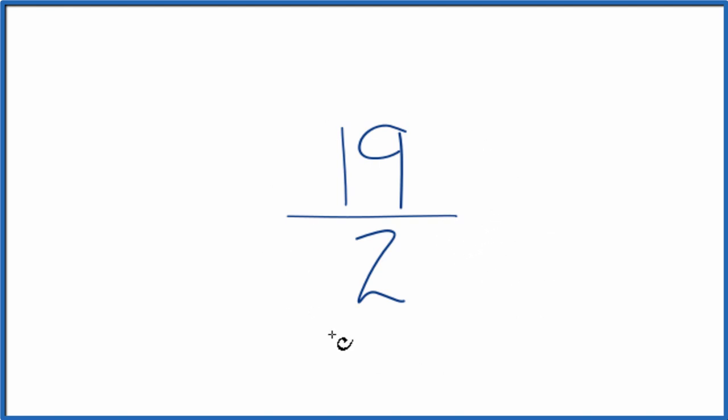So 19 over 2, the fraction, is already simplified. It's in lowest terms.